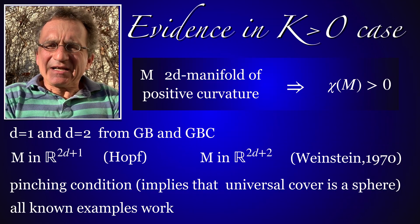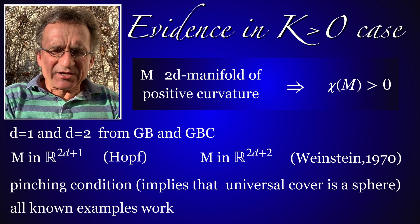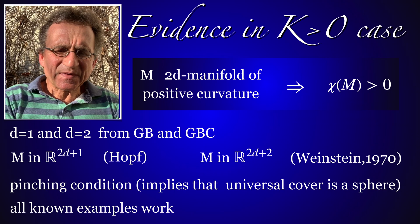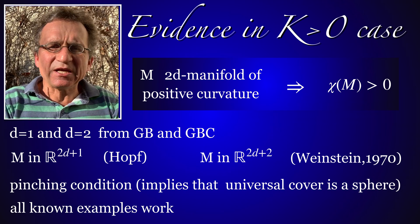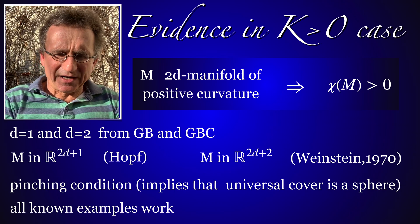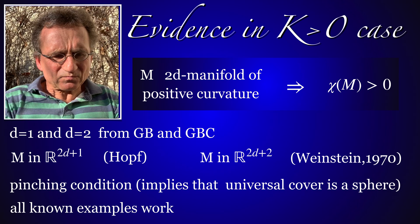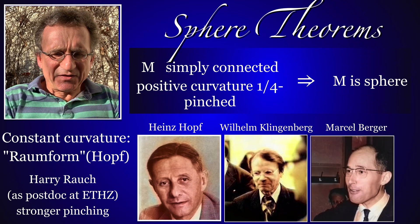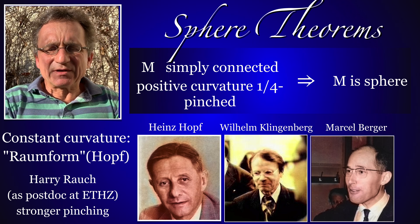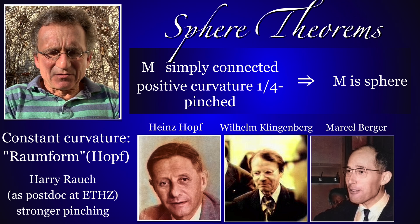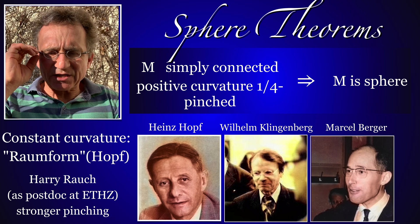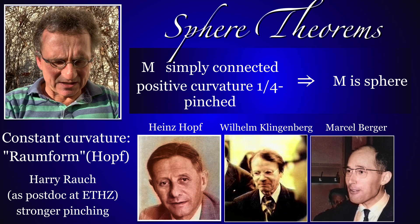There is already quite a bit of evidence for the conjecture in the two and four-dimensional cases and in the codimension cases. Another important case: if curvature is sufficiently pinched and the surface is additionally orientable, then one has a sphere. These are the sphere theorems. The ratio between highest and lowest curvature is less than four, the manifold is simply connected, and one has a sphere. This was conjectured already by Heinz Hopf and proven by Harry Rauch using a stronger pinching condition, and by Wilhelm Klingenberg and Marcel Berger.